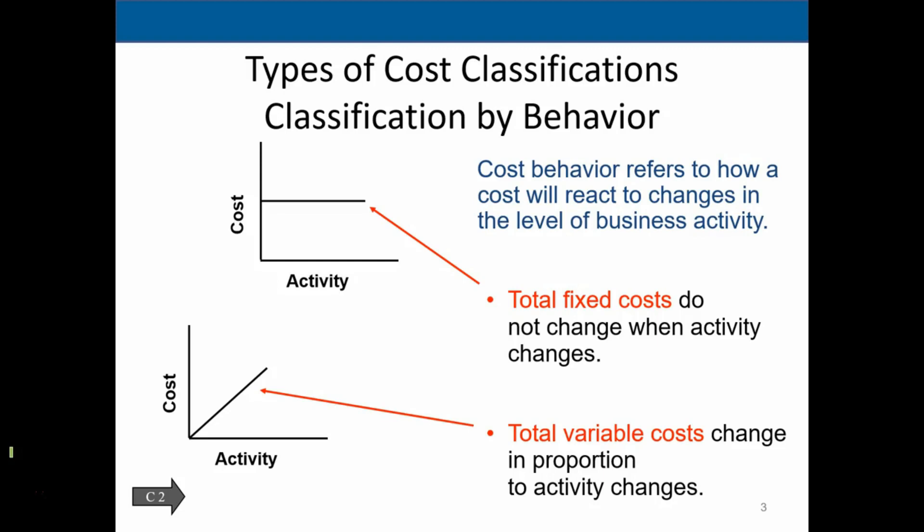In managerial accounting decision making, we're really trying to compare the sales price to the variable costs. If the burger is $10 and the variable costs are $6, then we're walking away with $4. Fixed costs, on the other hand, do not behave the same. If the rent is $1,000 a month, it doesn't matter how many burgers we sell — whether we sell one hamburger or 1,000 hamburgers, we're going to pay $1,000. So that cost is going to be constant; it's going to be fixed.